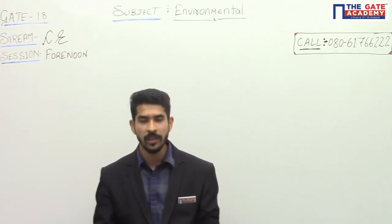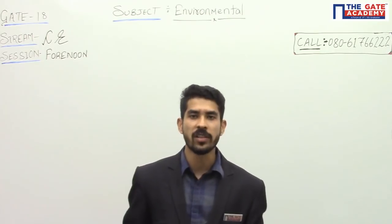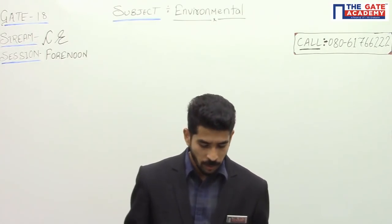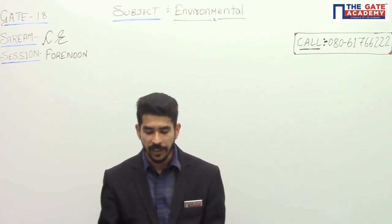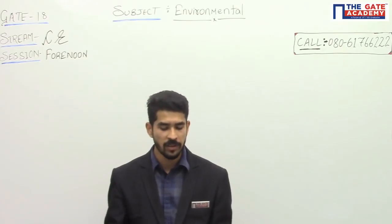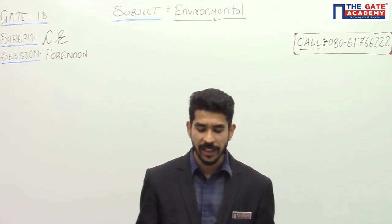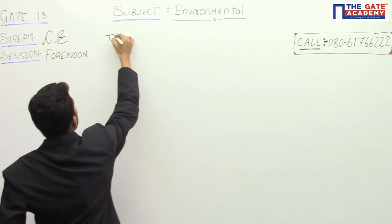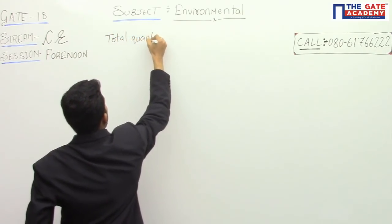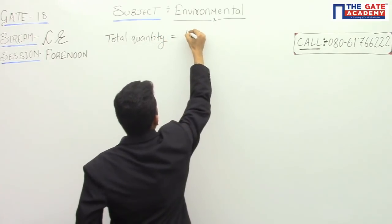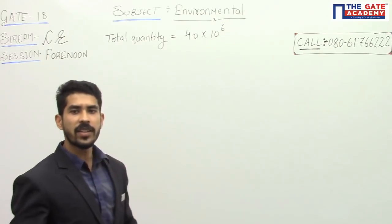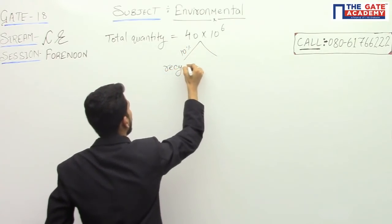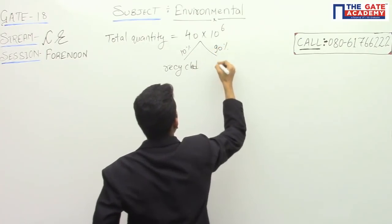Let us discuss a question asked in GATE 2018 forenoon session. This question is from civil engineering, subject environmental engineering. The question says a city generates 40×10⁶ kg of MSW (municipal solid waste), out of which 10% is recyclable and 90% goes to landfill. So the total quantity of solid waste is 40×10⁶ kg, 10% is recycled, and 90% goes to landfill.